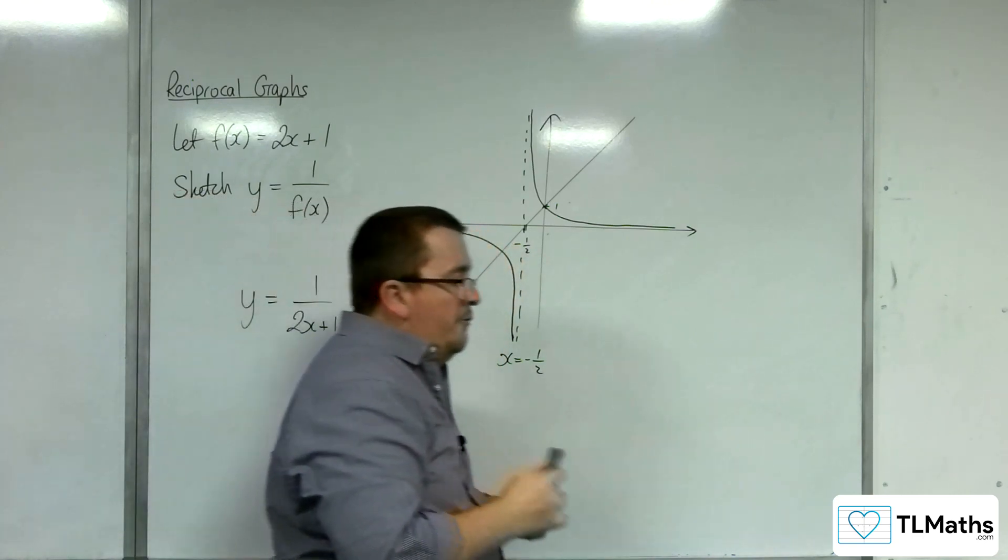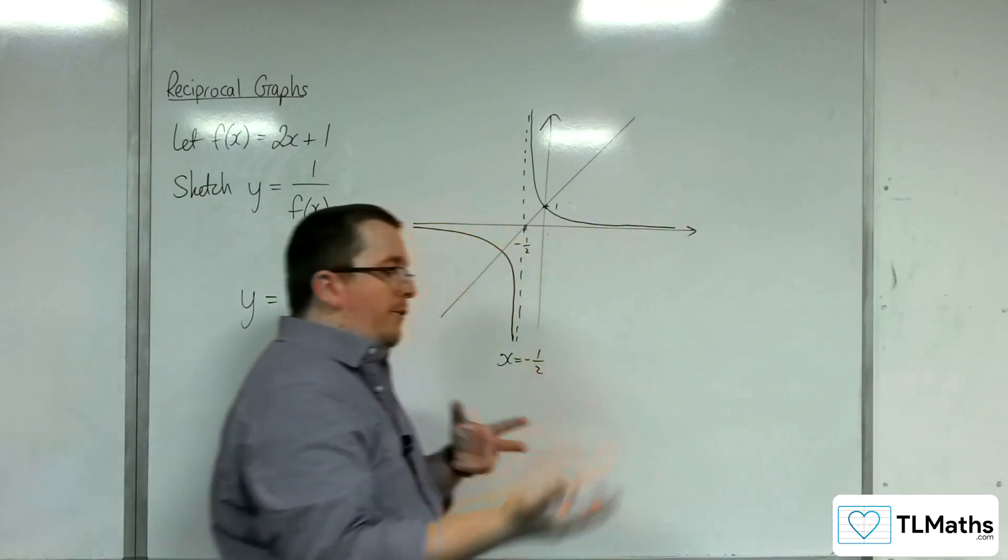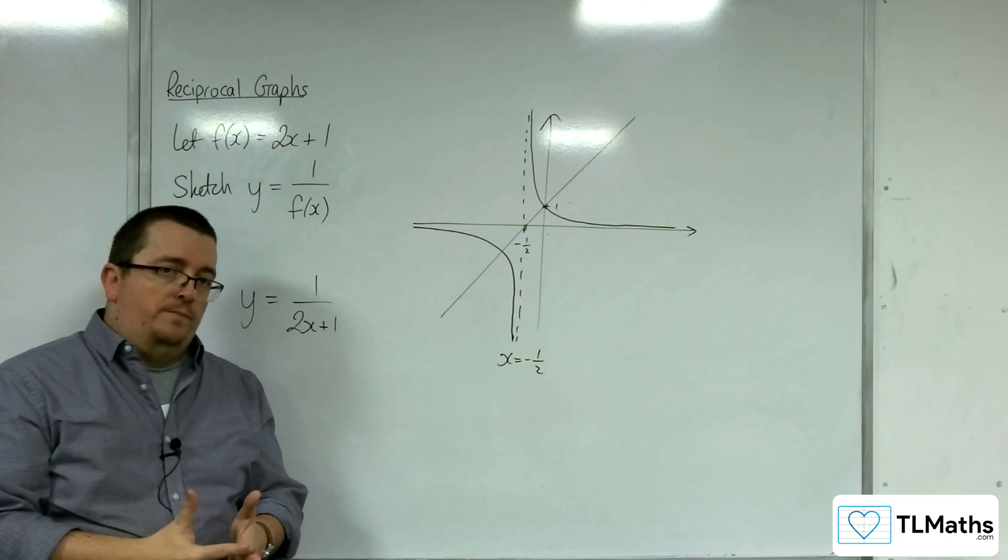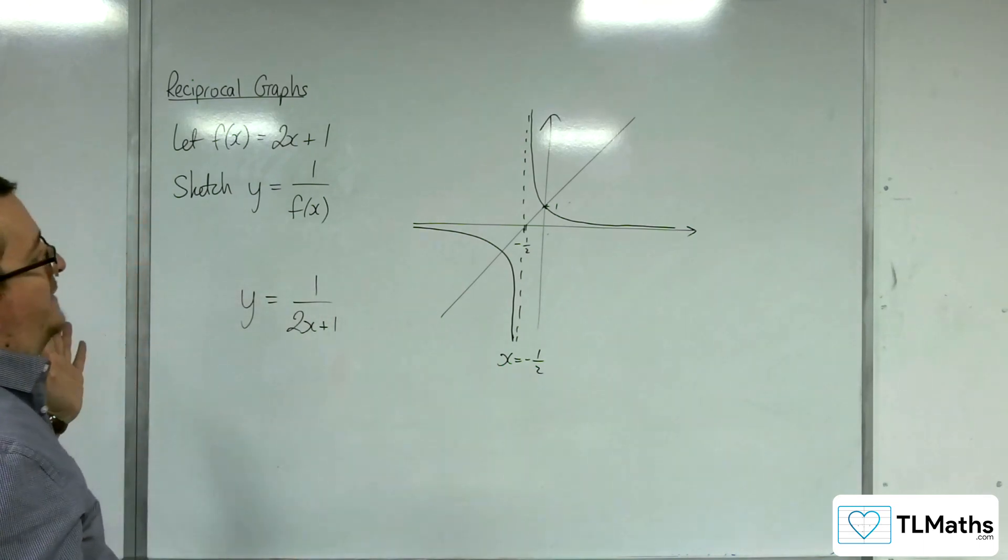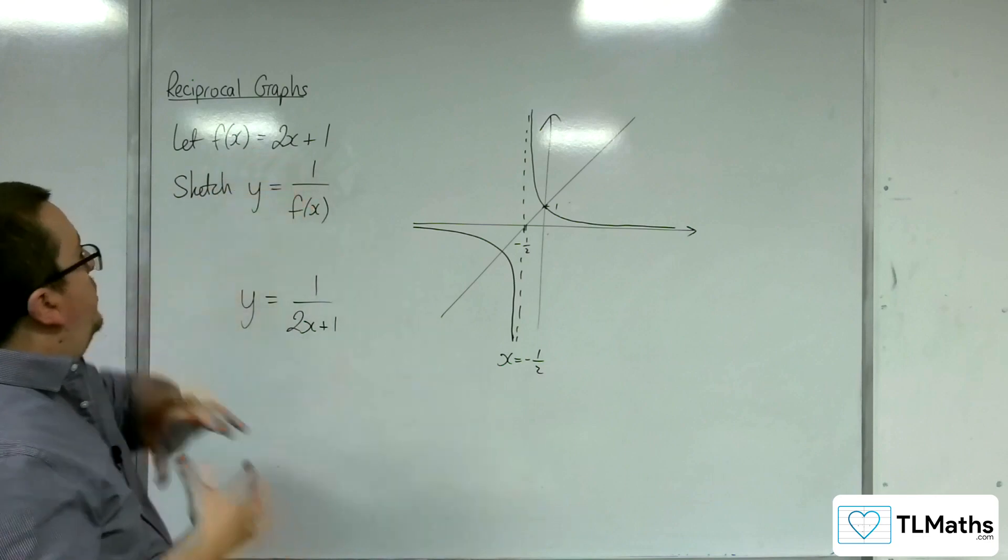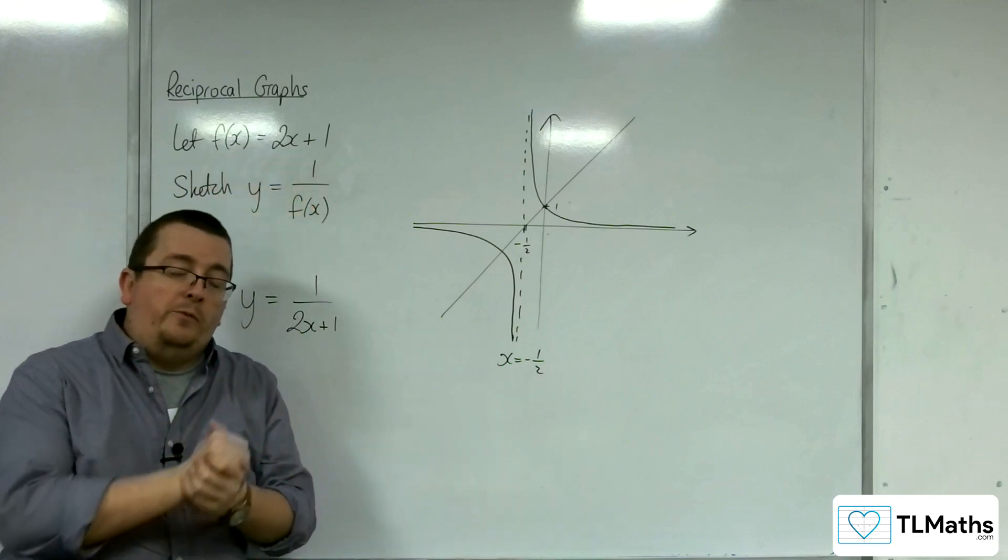So the 1 over f(x), the reciprocal graph, is governed by the behavior of the original function. Now, we were just looking at a very basic one here. Y equals 2x plus 1. F of x equals 2x plus 1.